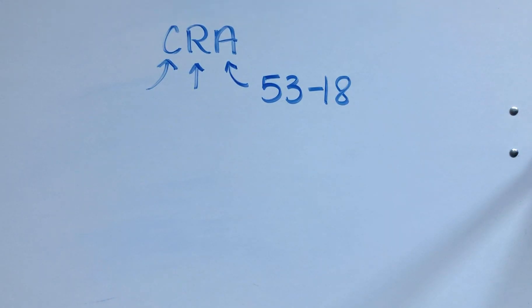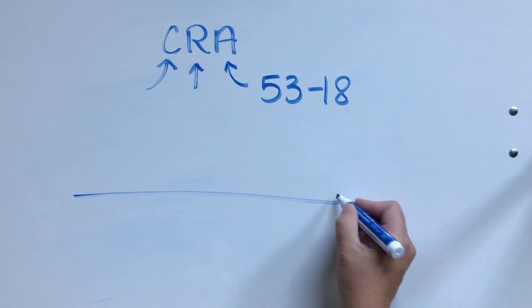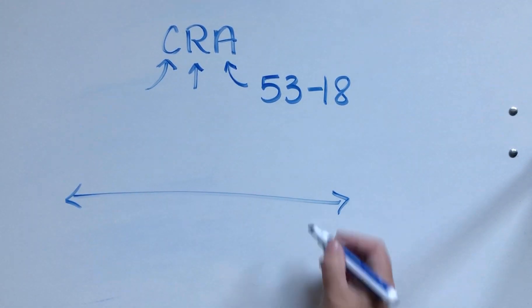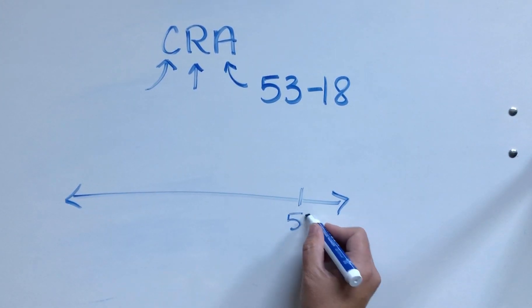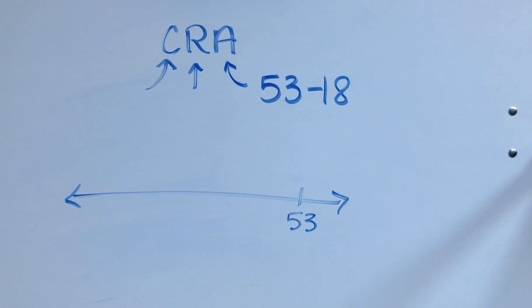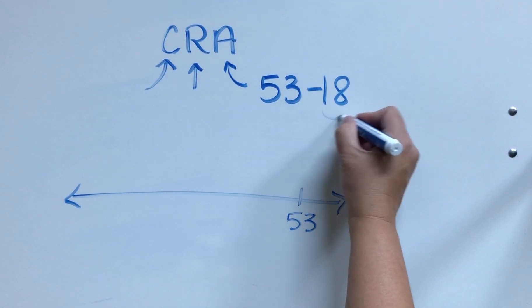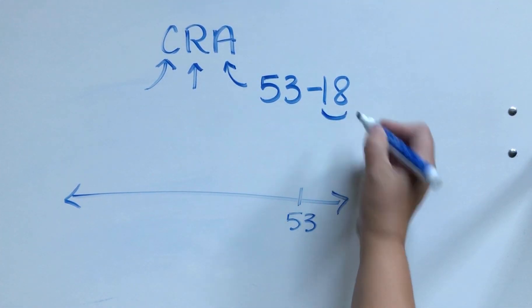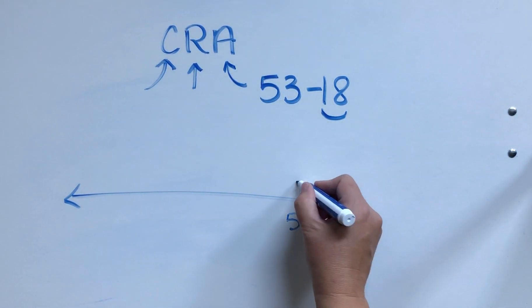So let's show 53 subtract 18 on a number line. So we're going to start with 53. Now 18, what do we know about 18? It is pretty close to 20, so let's begin by subtracting 20.